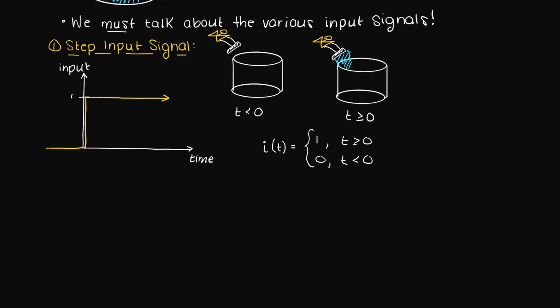We represent the step input signal like so, which should make sense as at time zero our input jumps from zero to one. The Laplace transform of the step input function is a over s where a is simply the magnitude of our input.